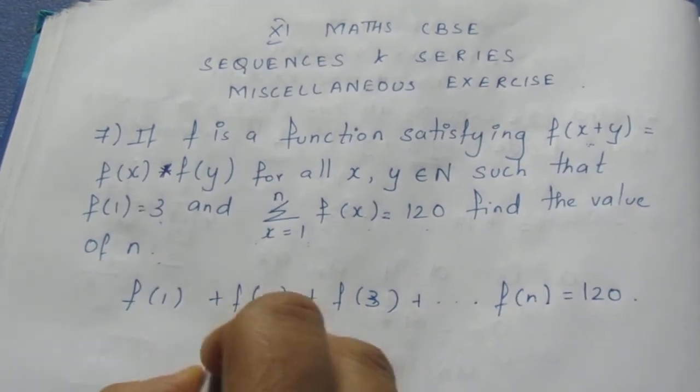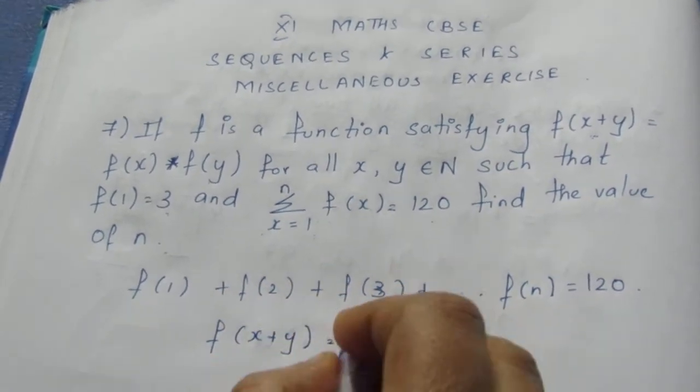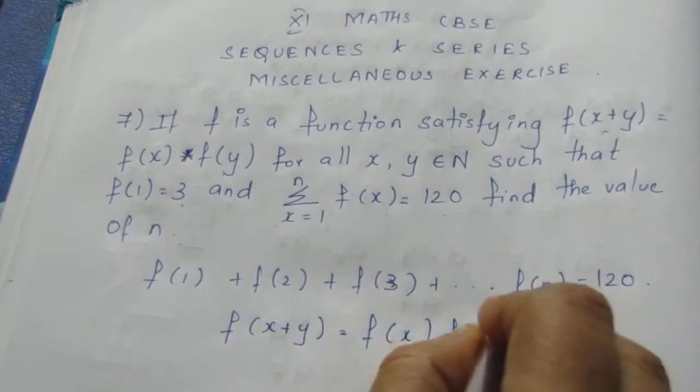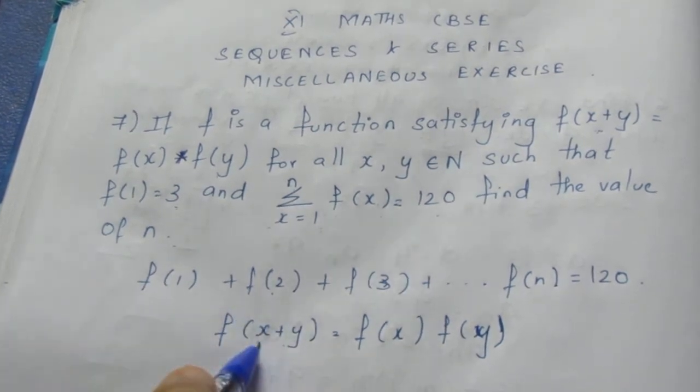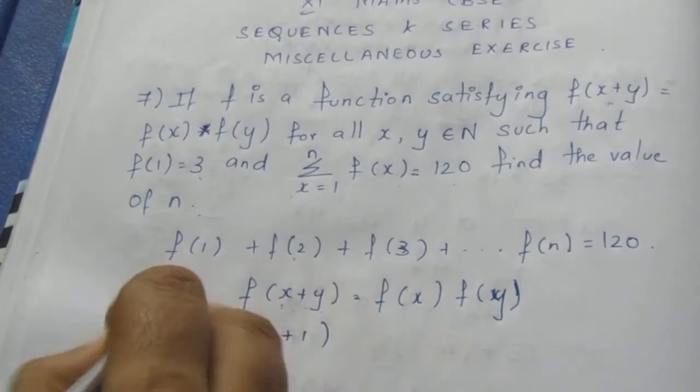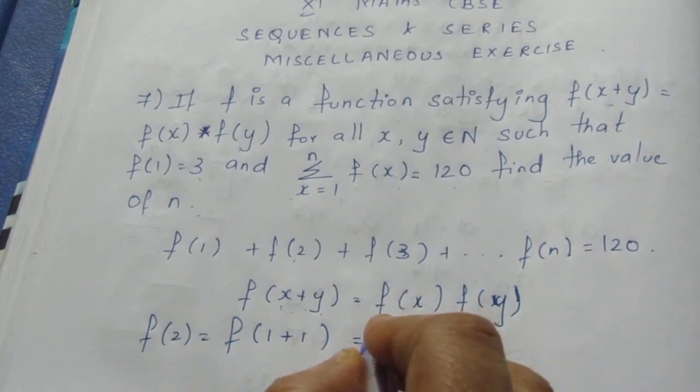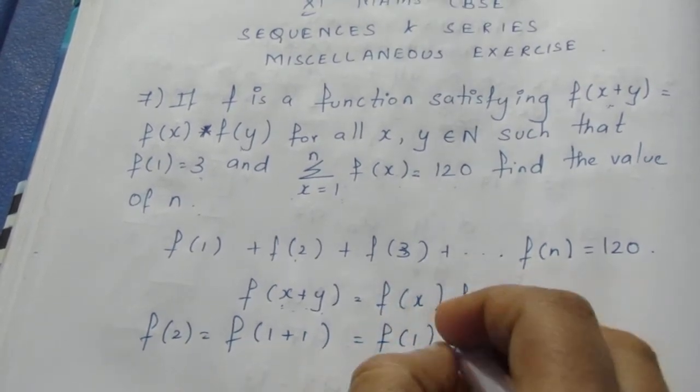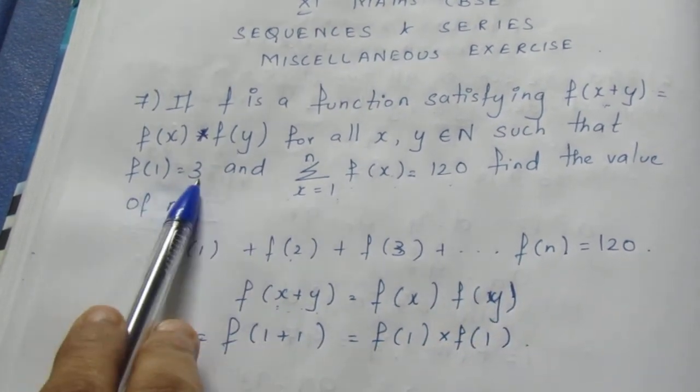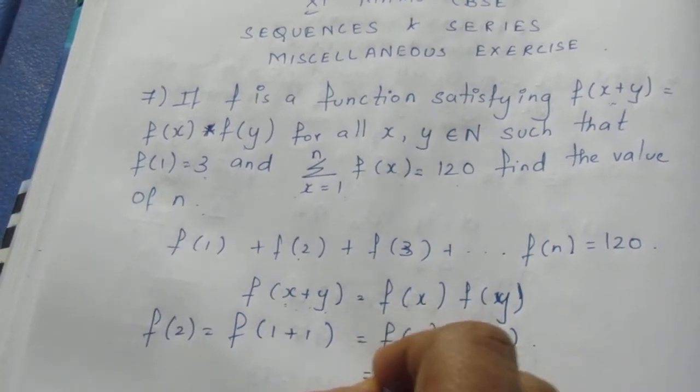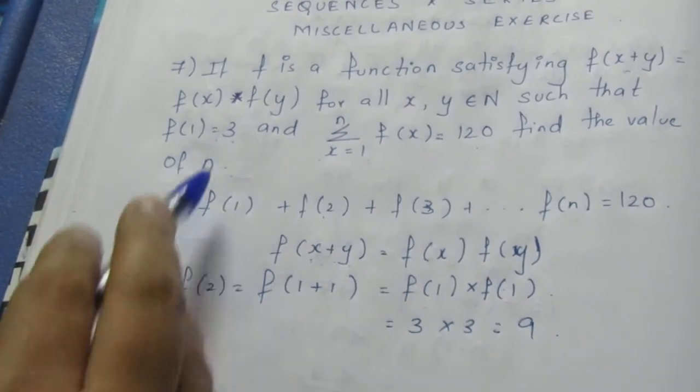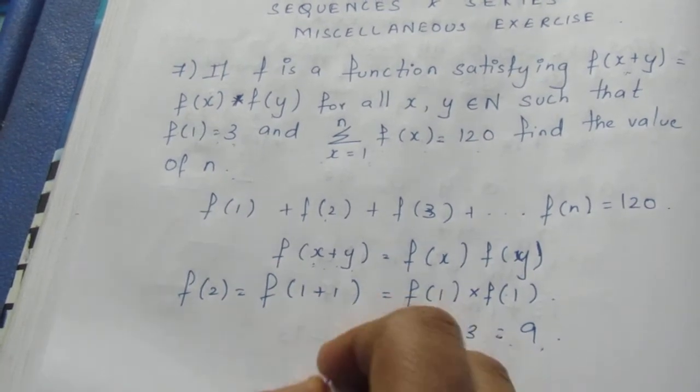The formula is f(x+y) equals f(x) times f(y). To find f(2), I can take this to be 1 plus 1. So f(1+1), which is f(2), becomes f(1) times f(1). We already know f(1) is 3, so 3 times 3 equals 9. Therefore f(2) equals 9.